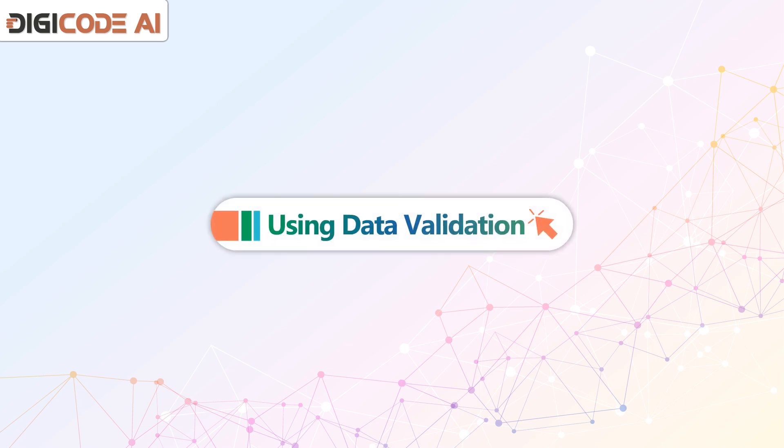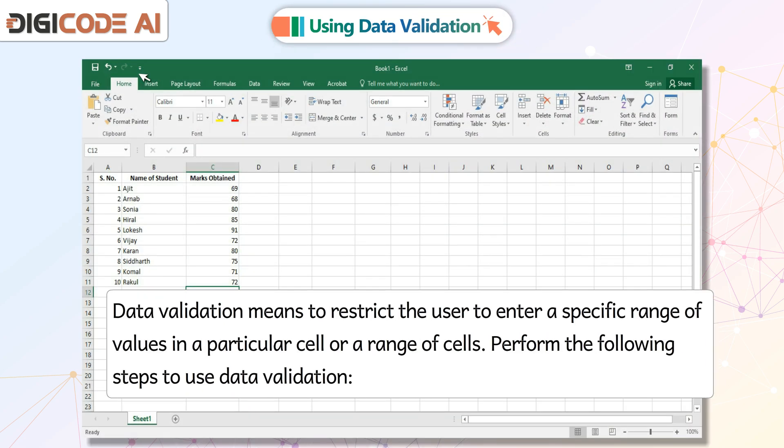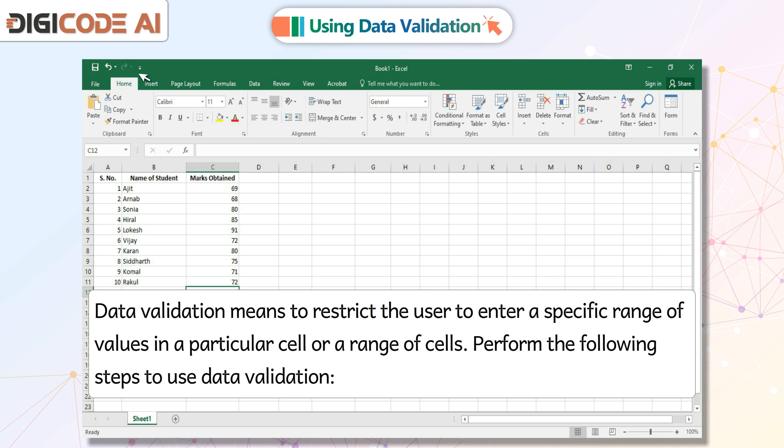Using Data Validation. Data Validation means to restrict the user to enter a specific range of values in a particular cell or a range of cells.